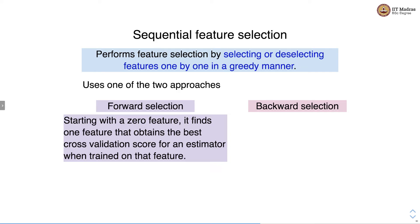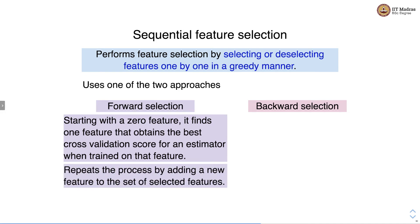In forward selection, we start with 0 features and find the one feature that obtains the best cross-validation score for an estimator trained on that feature, then add it to the set. After the first iteration we have one feature. In the second iteration, we add another feature and train the estimator with those two features, selecting the new feature that obtains the best cross-validation performance alongside the earlier selected feature. In the third iteration we try to add a third feature that again obtains the best cross-validation score, and we repeat this process until we get the desired number of features.